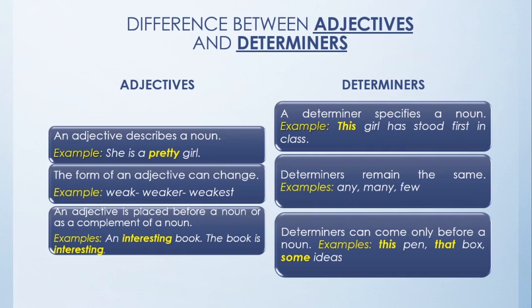Determiners like any, many, few remain unchanged — as in: any books, many children, few chocolates. An adjective is placed before a noun or as a complement of a noun: 'An interesting book' or 'The book is interesting.' Determiners can only come before a noun: this pen, that box, some ideas.